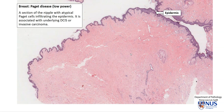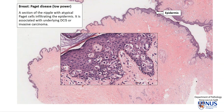Let's have a look at a case. Here is the histology of the case. This is the nipple, and these are some of the large ducts. Looking at a very high magnification view, this whole stretch here is the stratified squamous epithelium of the epidermis. These are the normal benign keratinocytes.